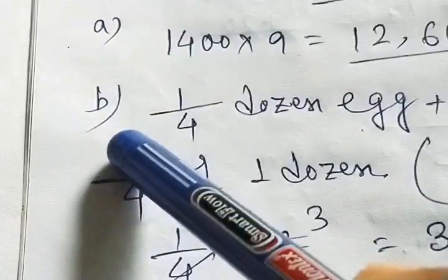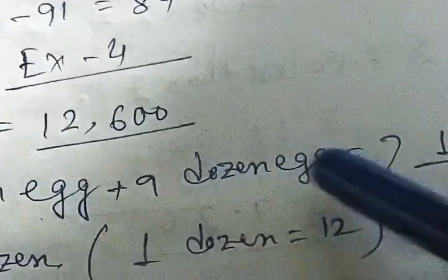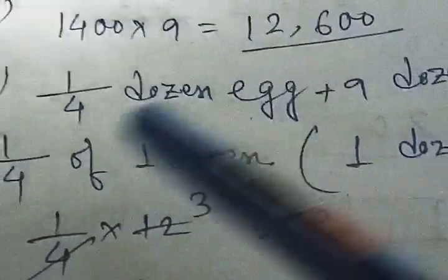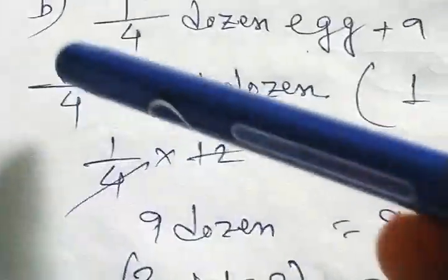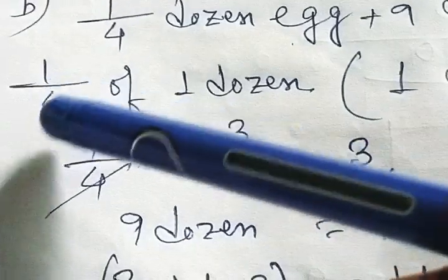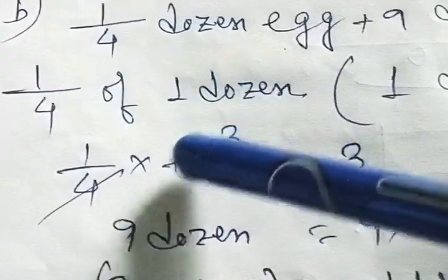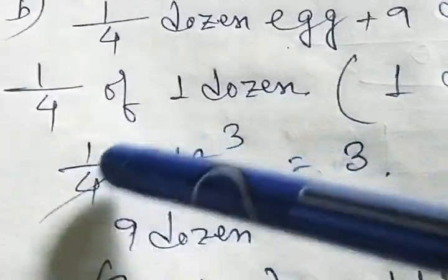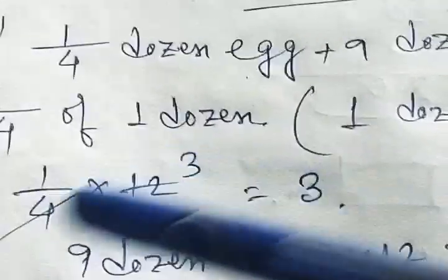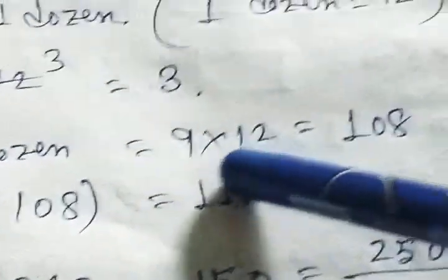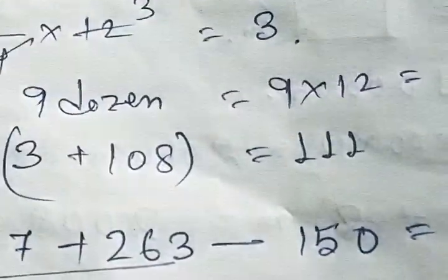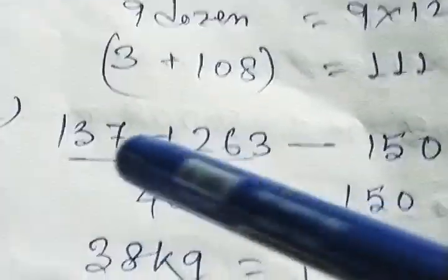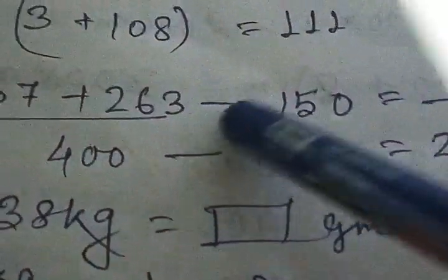Next number B. 1 by 4 dozen eggs plus 9 dozen eggs equal to what? At first, 1 by 4 dozen equal to what? 1 by 4 of 1 dozen. All of you know 1 dozen equal to 12. So 1 by 4 of 1 dozen equal to 12 divided by 4, equal to 3. Next, 9 dozen equal to 9 multiply by 12, so 108. So answer will be 3 plus 108 equal to 111.